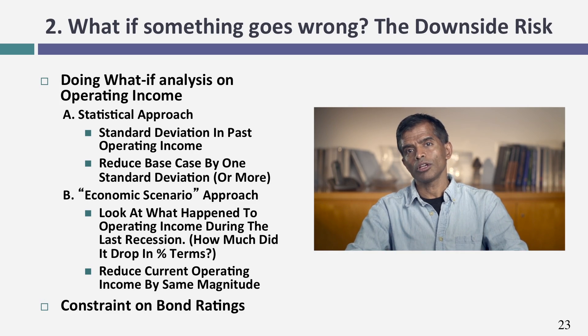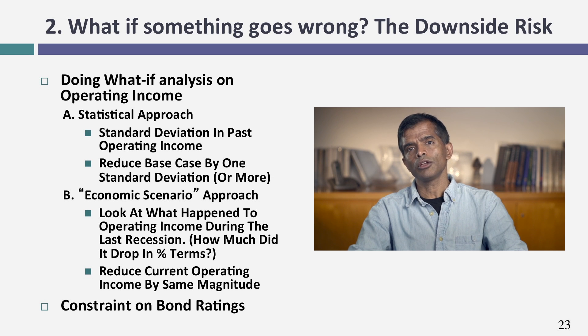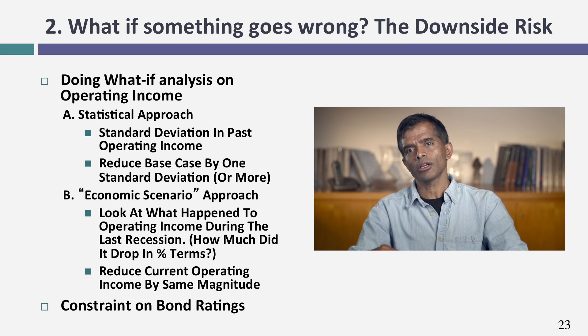Now the second question: what if something goes wrong? That's a serious question — whenever you borrow money, it's worth asking and answering. The big number driving your optimal debt capacity is your capacity to service interest expenses, which depends on operating income. If that operating income comes under assault — whether from a bad year or macroeconomic factors — you'll be in trouble making your interest payments. The first approach is to do what-if analyses around operating income, either statistically using standard deviations or by examining what the last recession or bad year looked like.